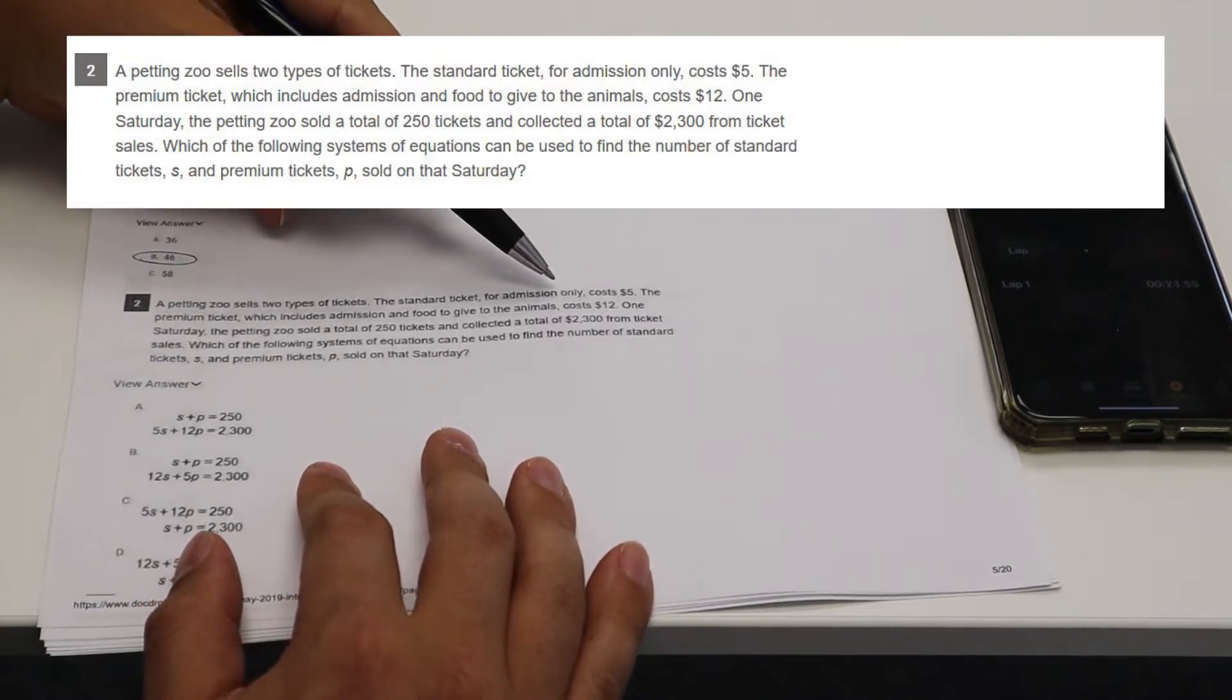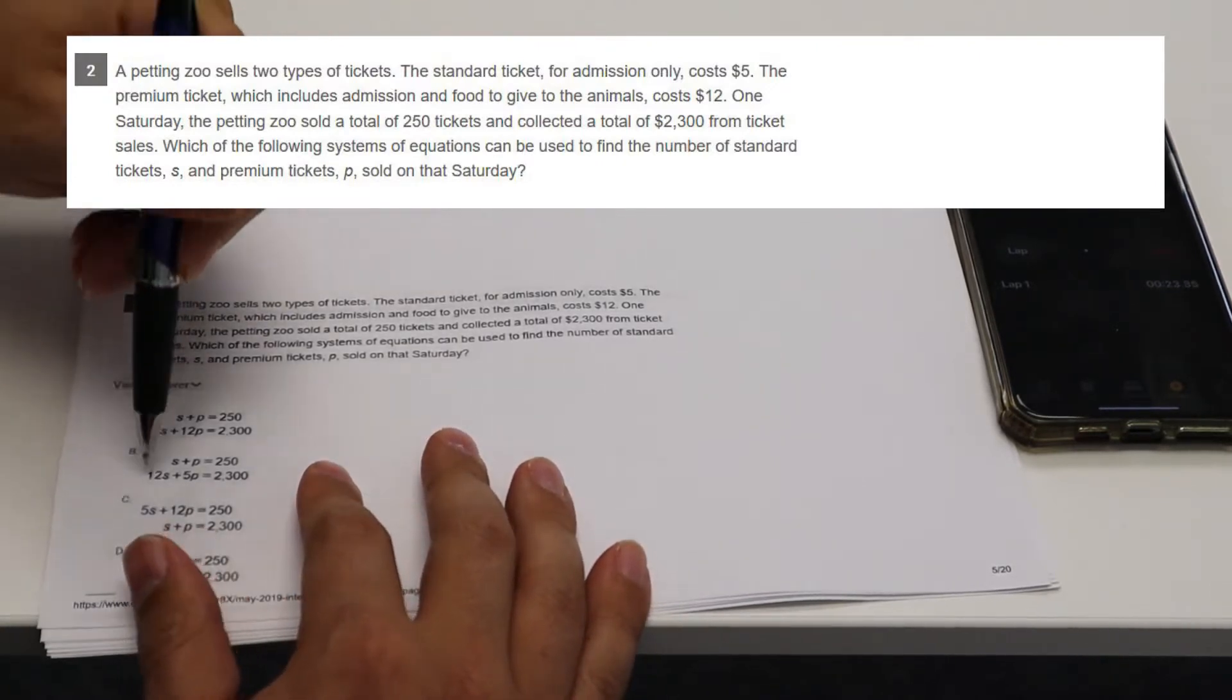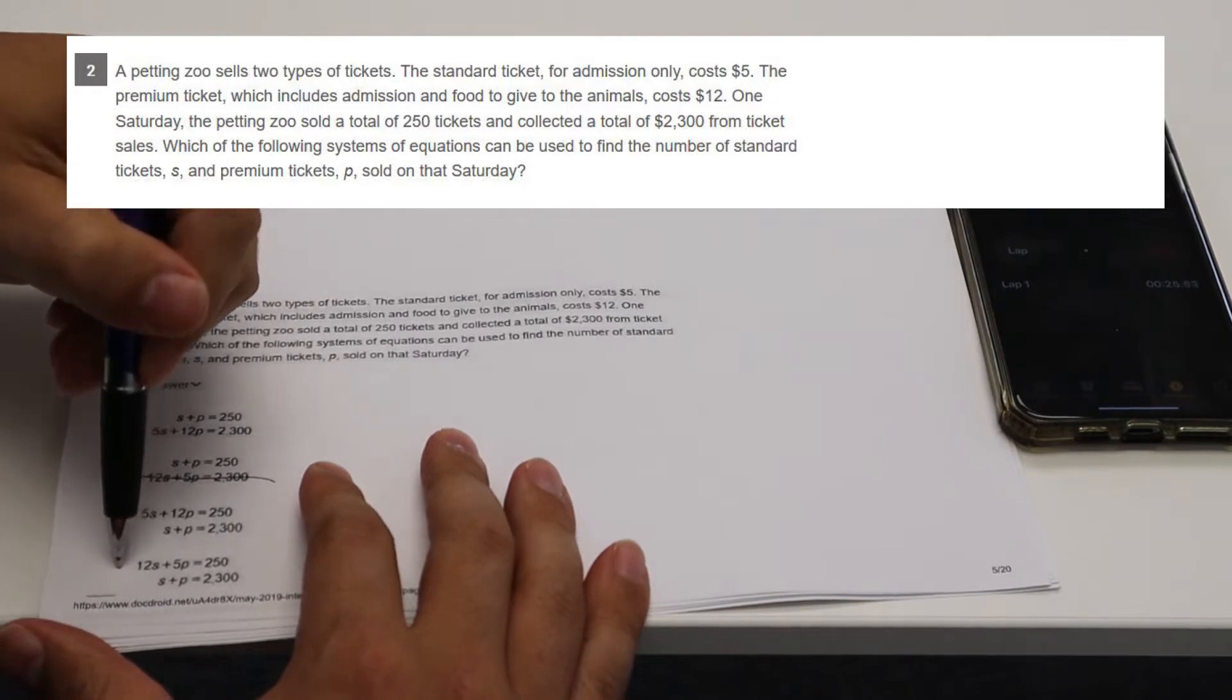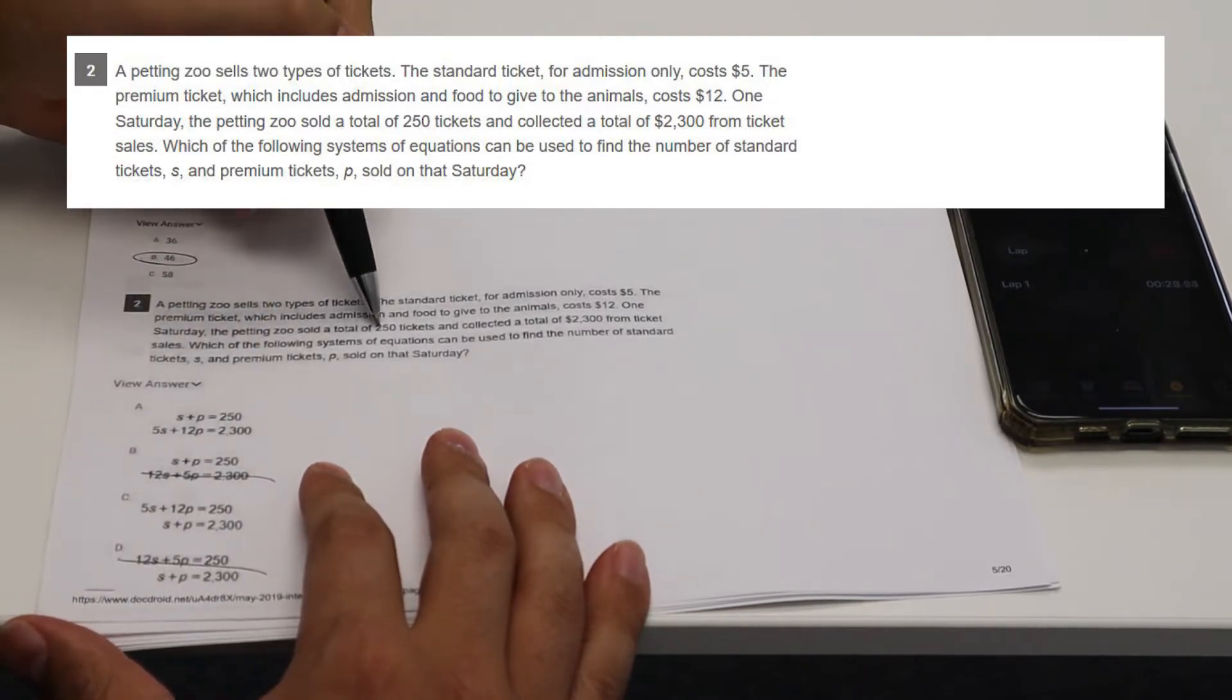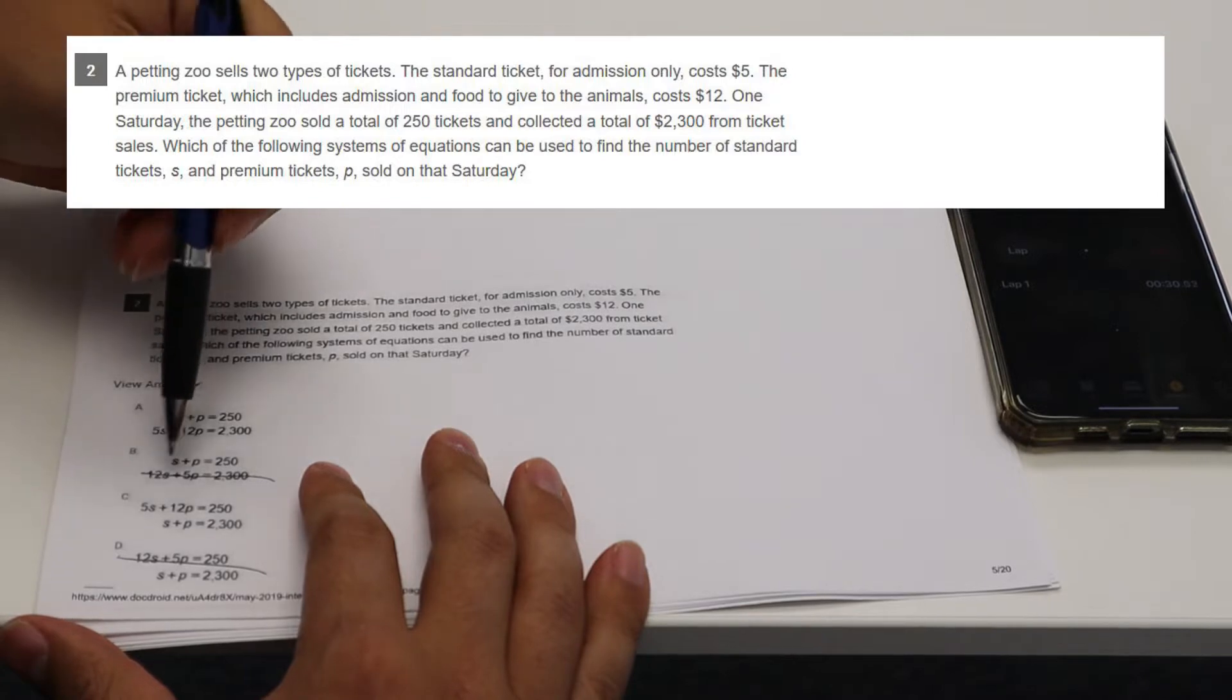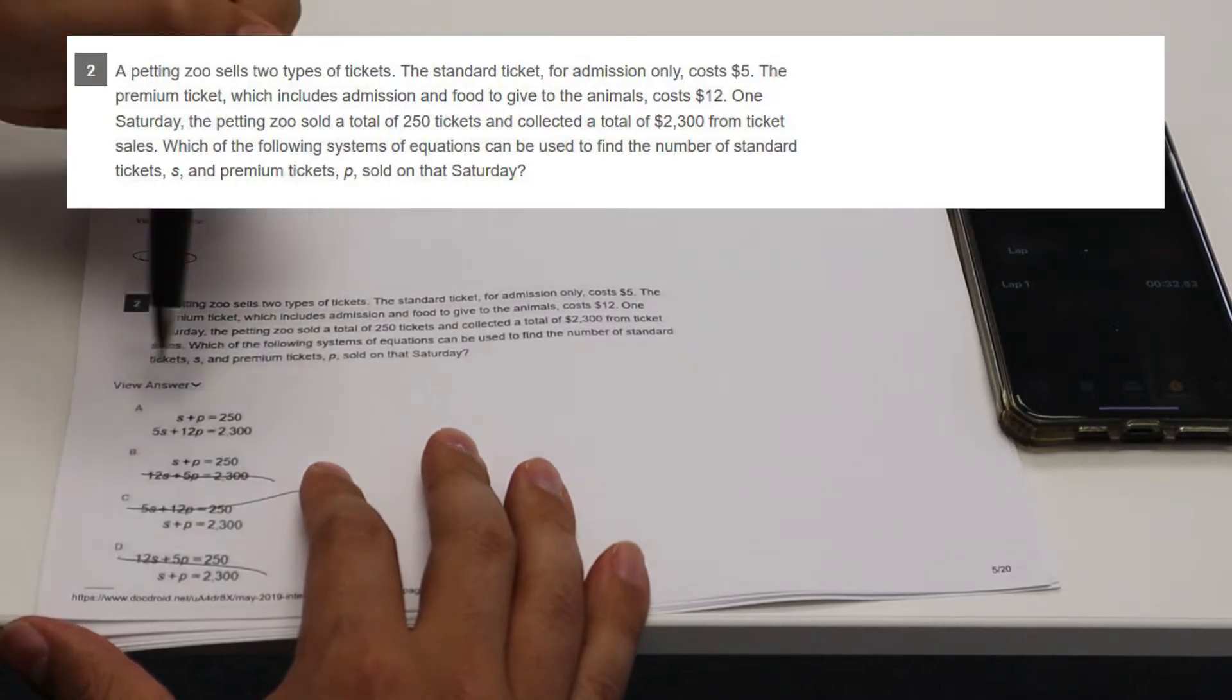Okay. System of equations. Standard ticket costs five. So the standard is five. You can get rid of that one. Get rid of that one. They'll also say that there's 250 tickets in total. So it's going to be A.